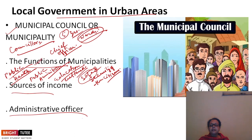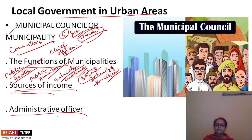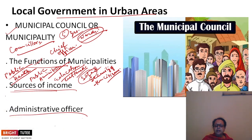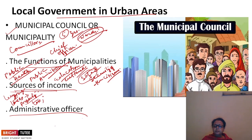All these facilities are expensive, so how does the municipality manage its income? The sources of income include: first, living taxes — since there is no farmland in the city, property tax is collected from people based on the property they own.